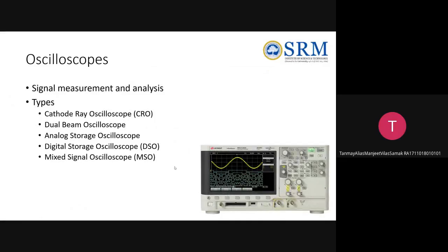The cathode ray oscilloscope and dual beam oscilloscope didn't have the functionality to store the waveform — they could only show it as long as the input was provided. Analog storage oscilloscopes had two types: electrostatic storage and fluorescent storage. In electrostatic storage, the electrostatic charge for the cathode ray tube was maintained even after the signal was removed, so the waveform stayed on the display.